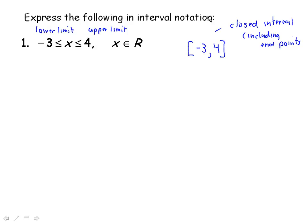And then we can compare that to the next example. Negative 2 is your lower limit, x is your upper limit, and then 0. And again, the set of real numbers. Now we're not including 2 or 0. So we write this as an open interval, which means we use round brackets. So negative 2 lower limit, 0 upper limit. And this is an open interval. So anybody looking at this will know that we're not including negative 2 or 0 in this set of numbers.